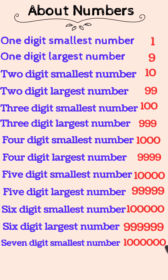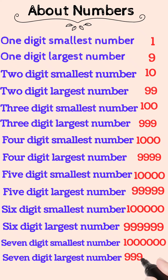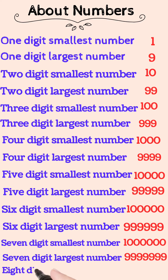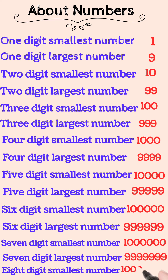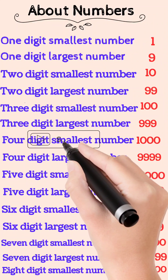Seven digit smallest number is ten lakhs, seven digit largest number is ninety nine lakhs ninety nine thousand nine hundred ninety nine. The last — eight digit smallest number is one crore.